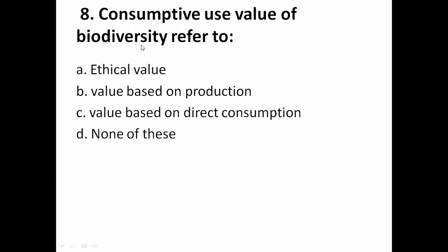Consumptive Use Value of Biodiversity refers to: A is ethical value, B is value based on production, C is value based on direct consumption, and D is none of the above. The Consumptive Use Value is the correct answer — it refers to value based on direct consumption.